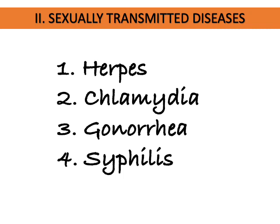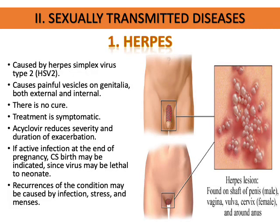The next topics are on STDs or sexually transmitted diseases: herpes, chlamydia, gonorrhea, and syphilis. Herpes is caused by the herpes simplex virus type 2 — type 2 is the STD. There are painful vesicles on the genitalia, both external and internal. Vesicles contain liquid inside. There is no cure since it is viral; treatment is also asymptomatic, and antiviral medications such as acyclovir may be used to reduce severity and duration of exacerbations.